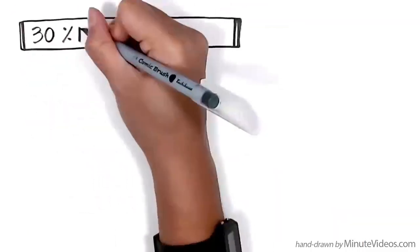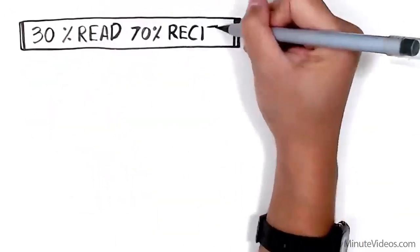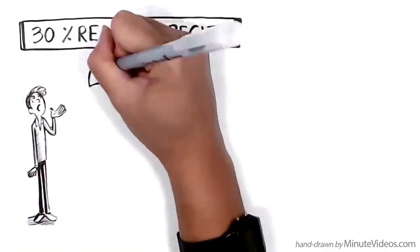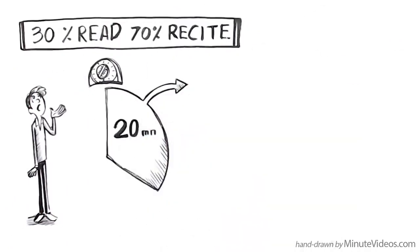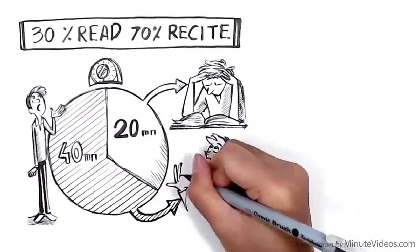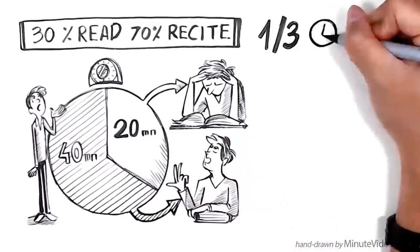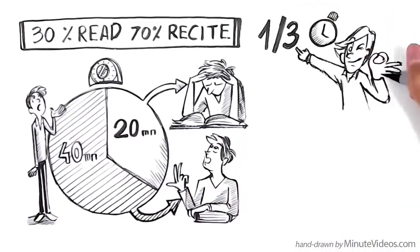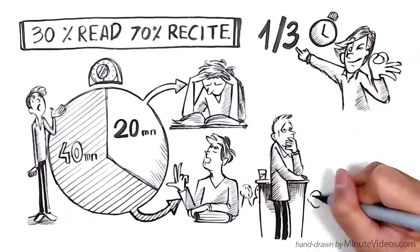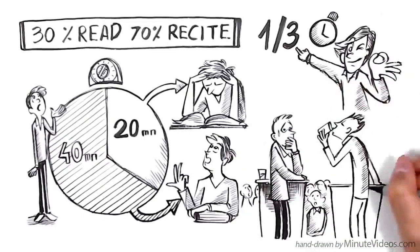30% read, 70% recite: If you have one hour to learn to recite a poem or prepare for a speech, spend 20 minutes of the time on studying the text and 40 minutes on practicing to recite. This ratio usually leads to the best results. In the case of an emergency, put a glass of water next to you. Take a sip whenever you lose it.